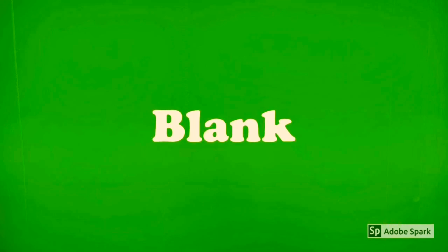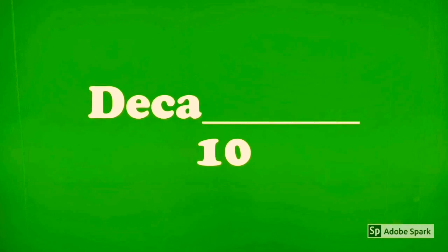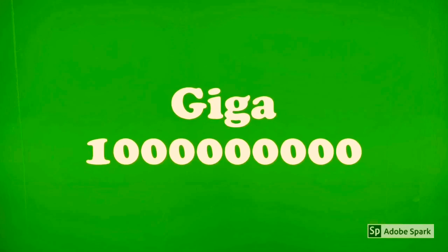Then, things start getting bigger. Deca makes things ten times bigger. Hecto, a hundred times. Kilo, a thousand times. Mega makes things a million times bigger, but it doesn't stop there. We still have giga, terra, and peta.